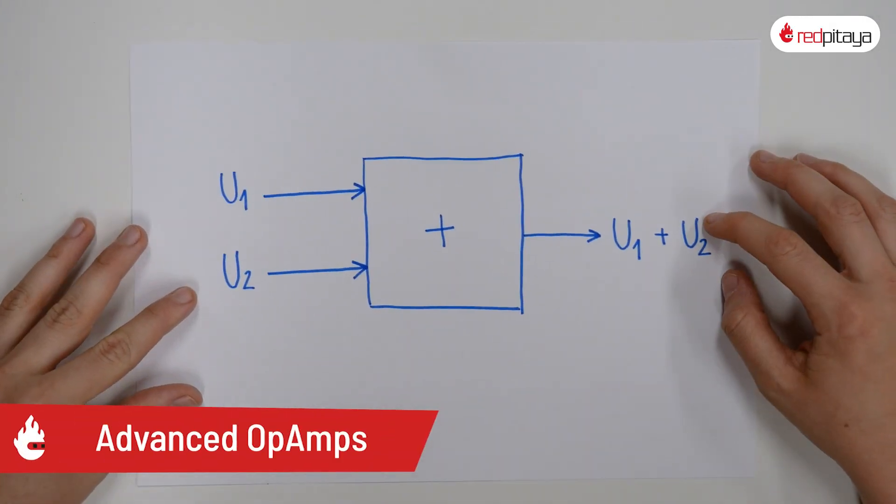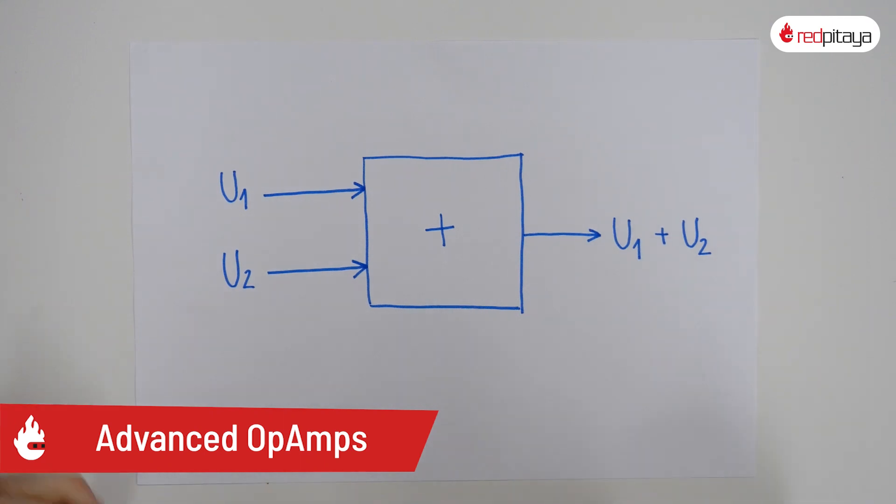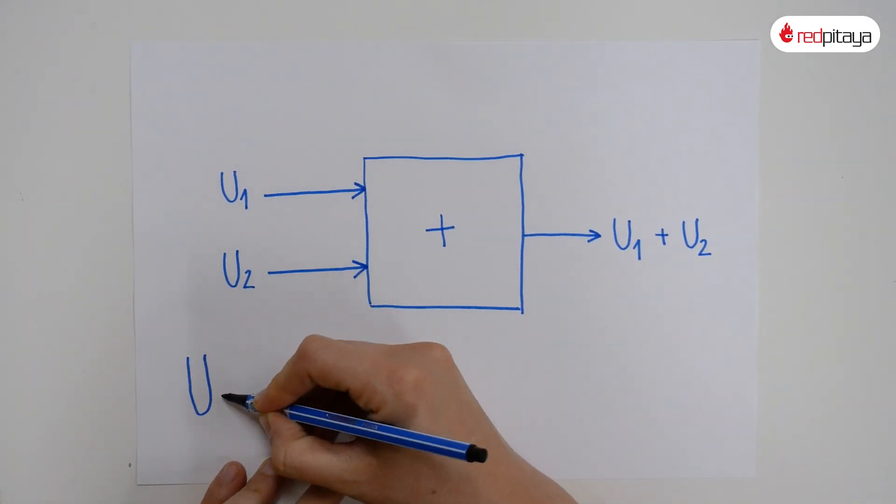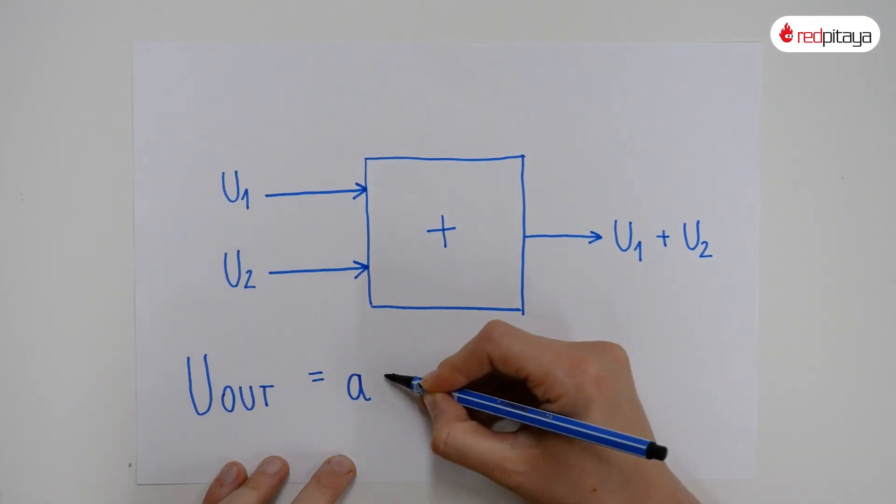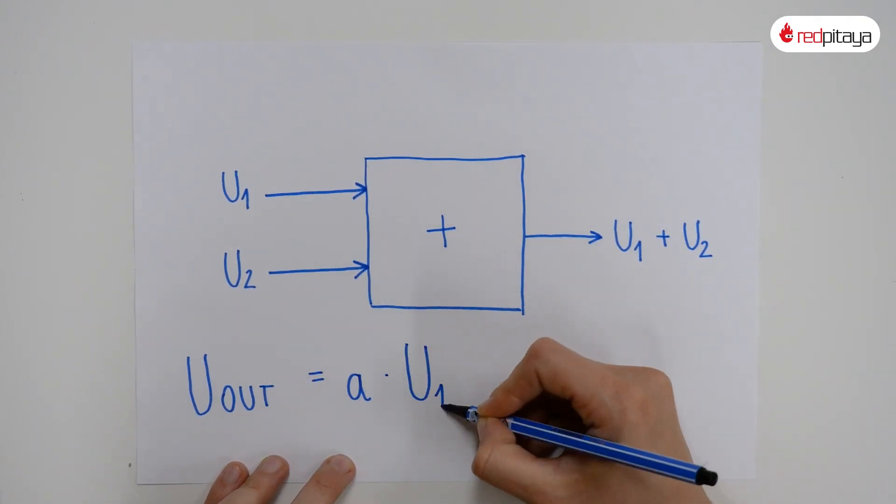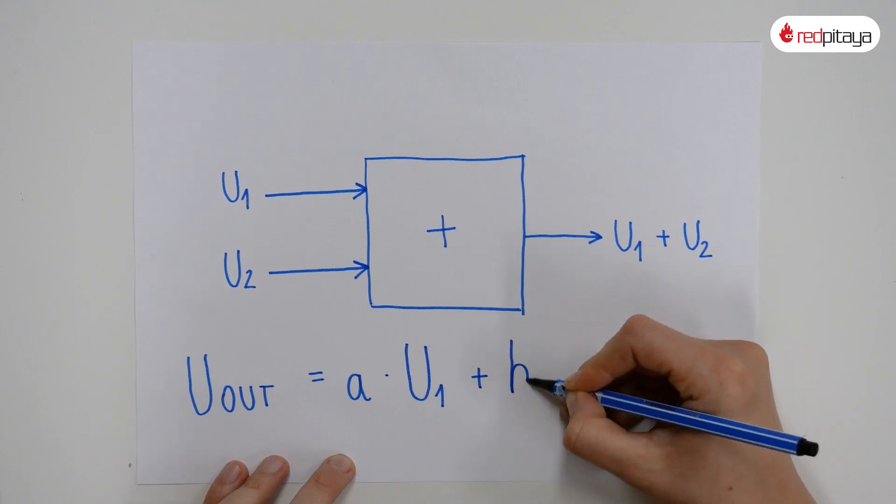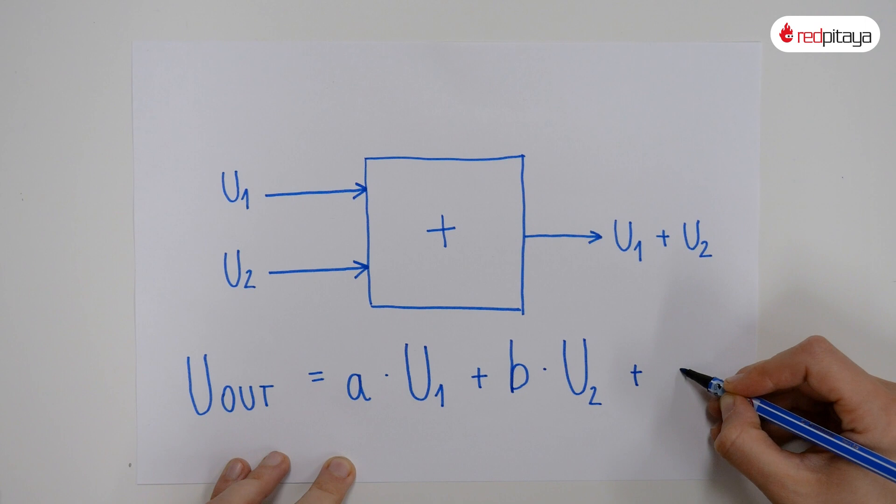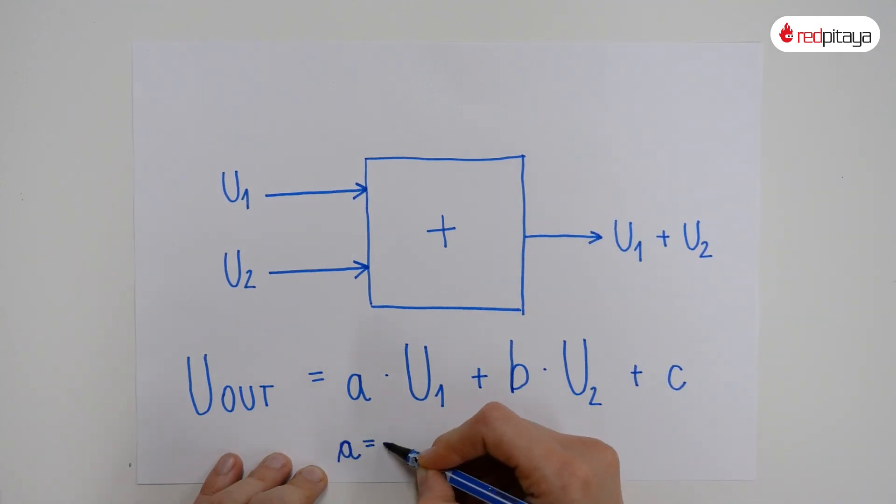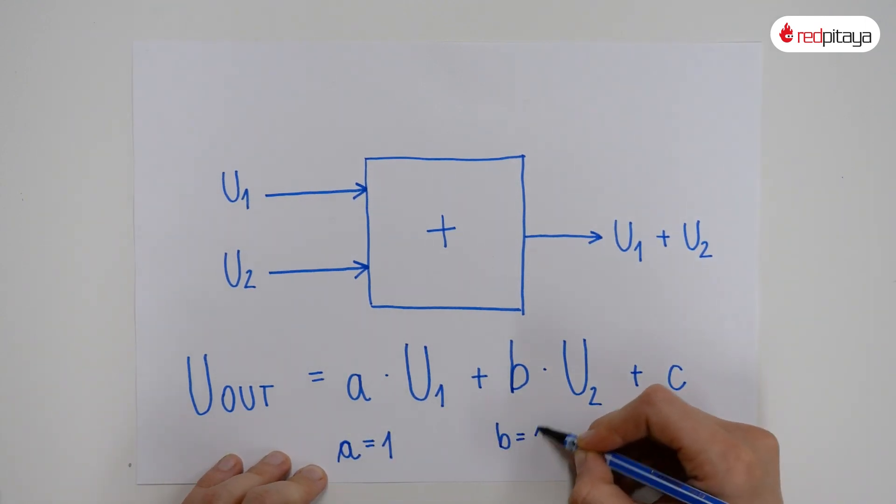Let's first define what we want to achieve. We want a device that takes multiple input signals and outputs the sum of those signals. To generalize, we want a circuit that can perform the following function. To perform a simple summing operation, coefficients a and b must equal 1, while c must be 0.